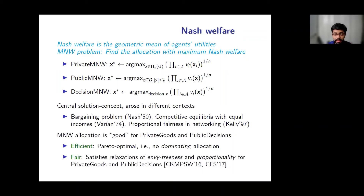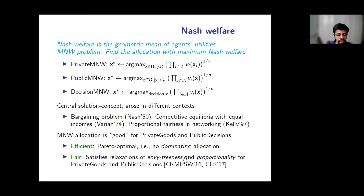Maximum Nash welfare is especially interesting because it gives good allocations for private goods and public decisions. The MNW allocation is Pareto optimal — there is no other allocation that makes an agent better off without making another worse off — since a Pareto-dominating allocation would naturally have higher Nash welfare. The MNW allocation is also fair: for private goods it satisfies a relaxation of envy-freeness, and for public decisions it satisfies a relaxation of proportionality, which I will introduce shortly.